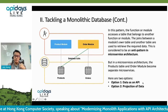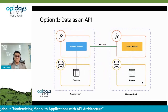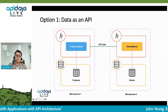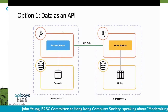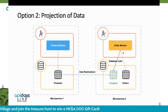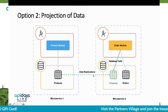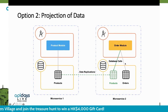We have two options to address this. The first option is data as an API — we make an API call from the order module to the product module microservice to grab data, then return the result to the order module. The second option is projection of data — we replicate and synchronize the table from microservice one to microservice two, so we can use a database join call within microservice two for all the modules.